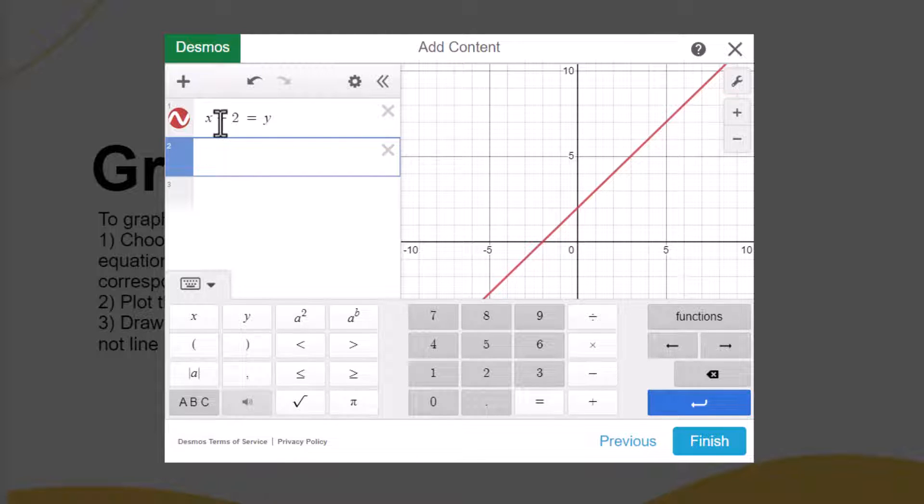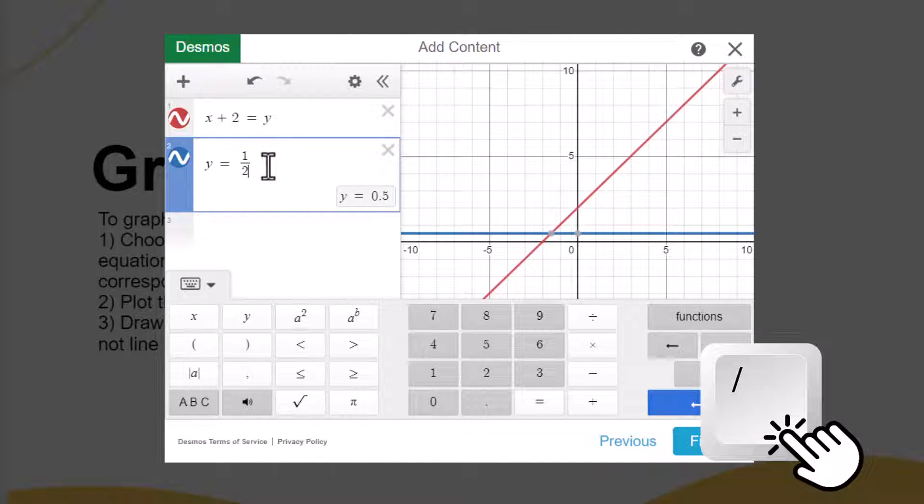Next, we will plot a curve: y equals one-half x squared. To enter a fraction, you can select the division sign on the Desmos keyboard or use the forward slash key on your external keyboard.